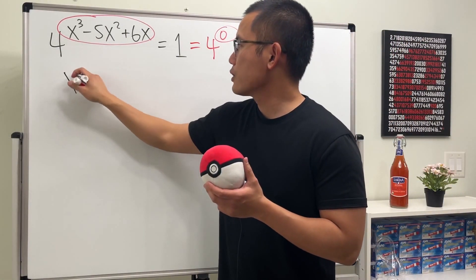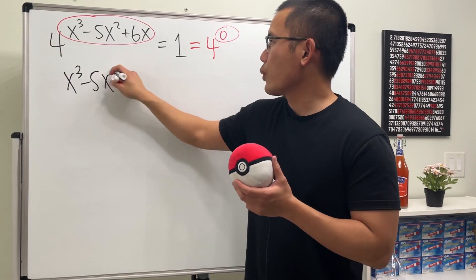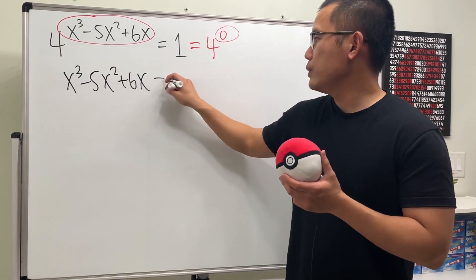So we are just looking for x³ minus 5x² plus 6x, and we just have to make it equal to zero. And to solve this cubic equation, it's actually not so bad at all.